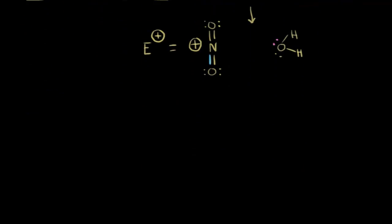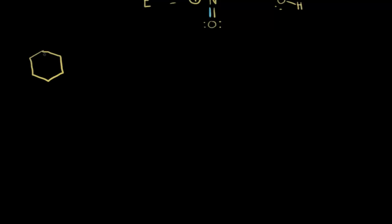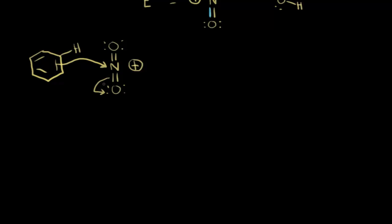The electrophile is going to add to the benzene ring — a nucleophile-electrophile reaction. Drawing our benzene ring with a hydrogen, we have our positively charged nitronium ion. The point of the catalyst was to produce this electrophile. The pi electrons in our benzene ring are going to function as a nucleophile and attack the electrophile — those electrons attack the positively charged nitrogen, kicking these electrons off onto the oxygen.